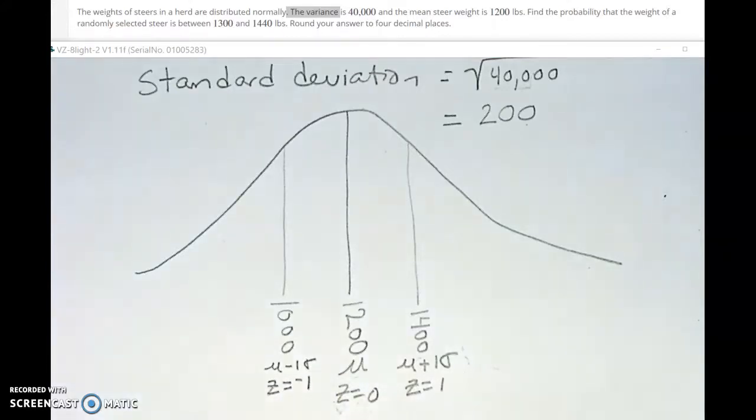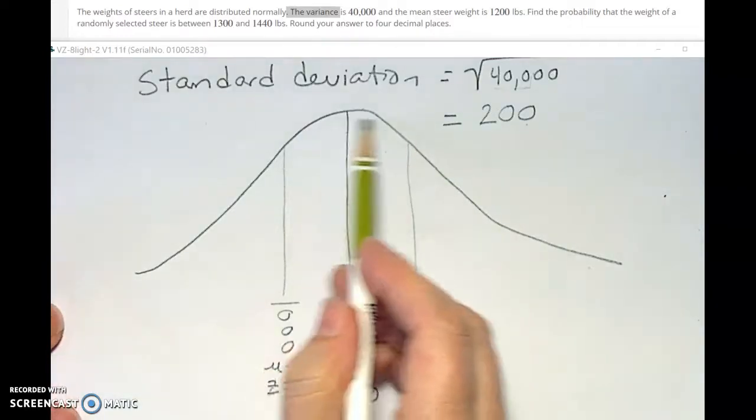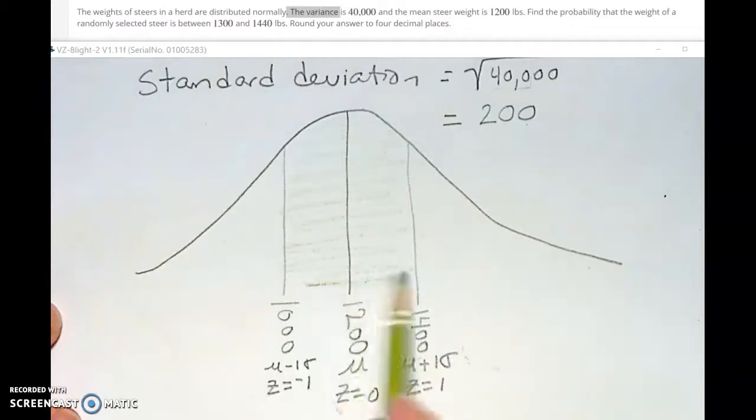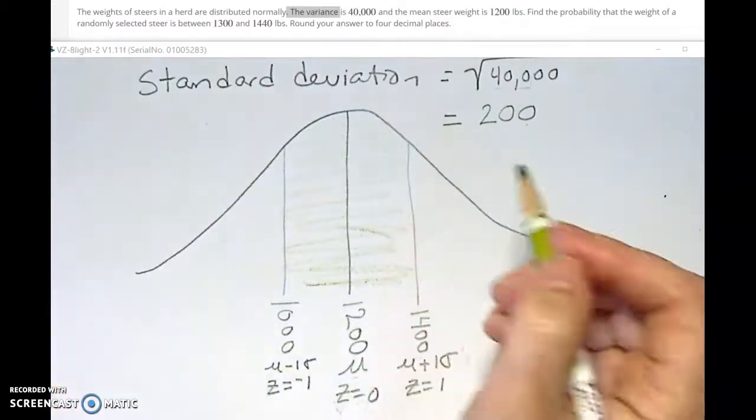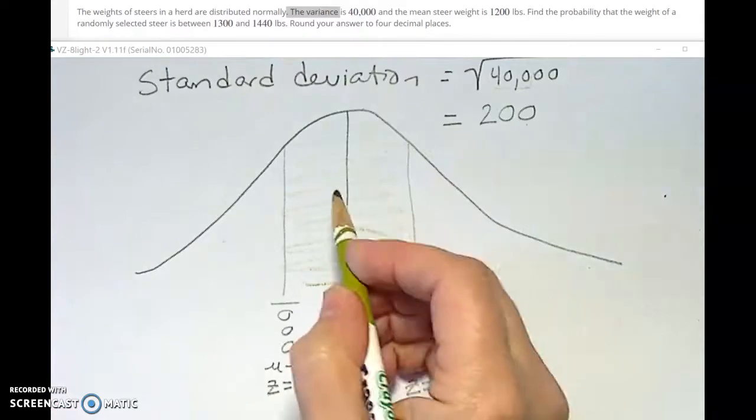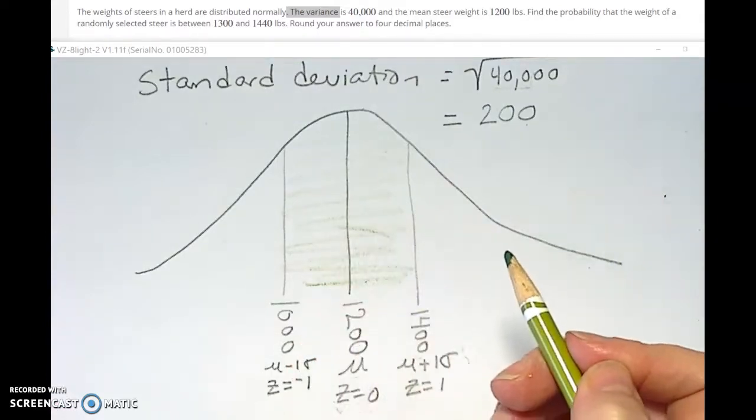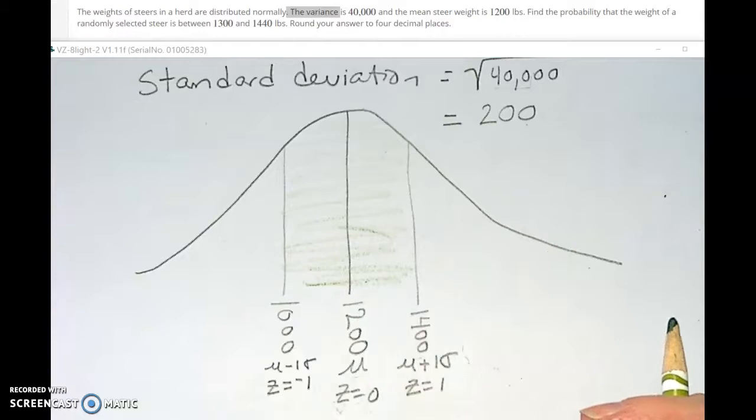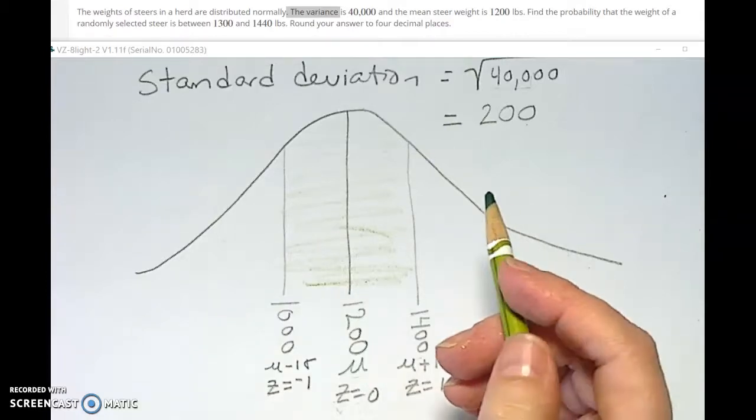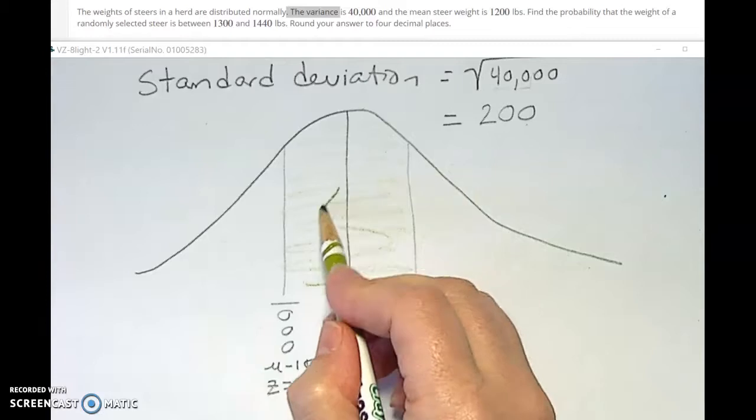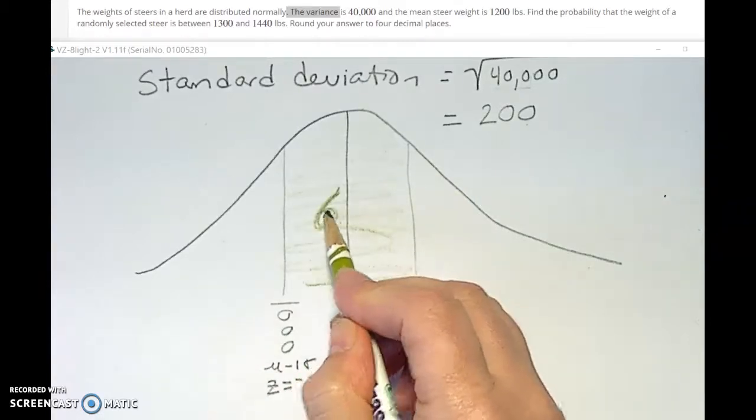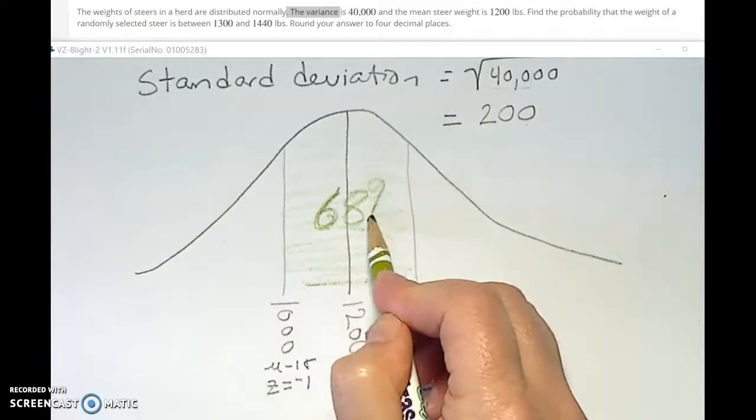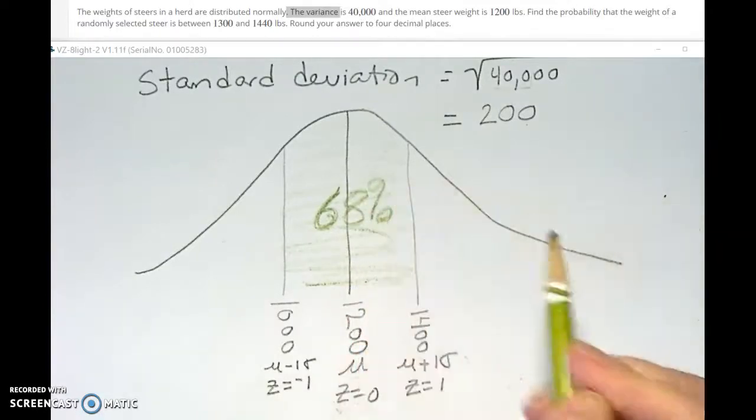And this is the mean minus one standard deviation, so 1,200 minus 200 is 1,000, and the z-score here is negative one. So we know that the average steer weigh between 1,000 and 1,400 pounds. Does either one of you have the number in your head of the percentage between minus one and plus one standard deviations? This is from the empirical rule. 68 percent of those steer weigh in that range. The average steer is in that range, but that's not what they're asking for.